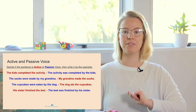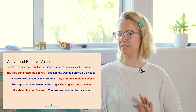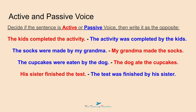Here are the answers on the screen — active voice sentences in red and passive voice sentences in blue. The first sentence is active voice: the kids completed the activity. Rewritten in passive: the activity was completed by the kids. Sentence two: the socks were made by my grandma — that's passive voice, rewritten in active voice. The third sentence is passive voice: the cupcakes were eaten by the dog, rewritten in active voice. The last one is active voice: his sister finished the test — rewritten in passive: the test was finished by his sister.